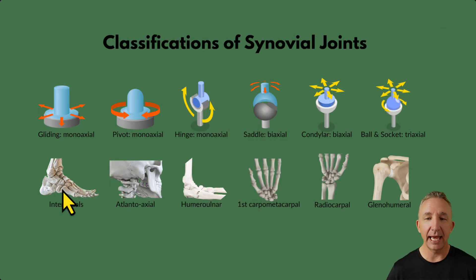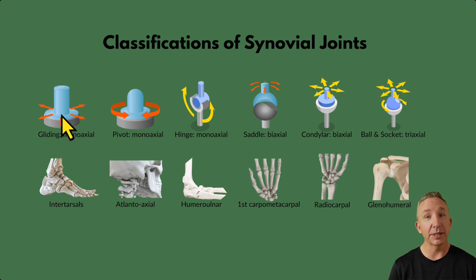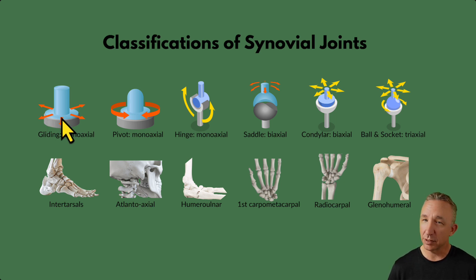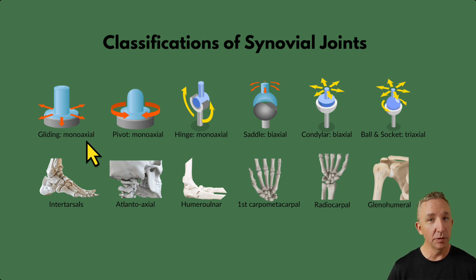First, we look at a gliding joint, also known as a plane joint. A plane or gliding joint refers to flat bones that are together — they can be slightly curved but are the same size — so the bones slide together. The motion of the joint is small but constrained by the ligaments. They can be described as monoaxial or uniaxial, meaning they only move on one plane, depending on the ligaments.